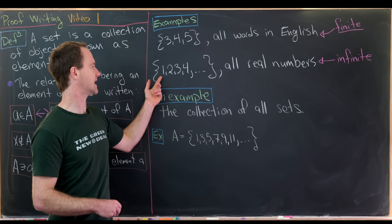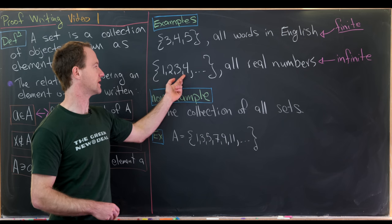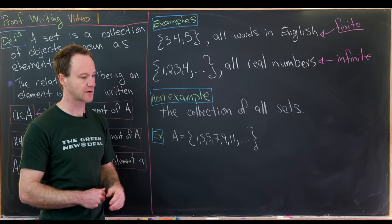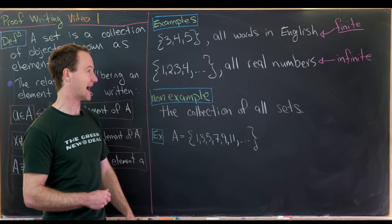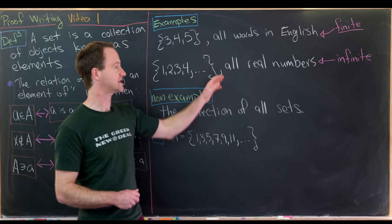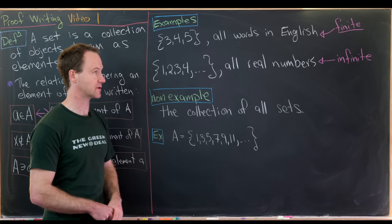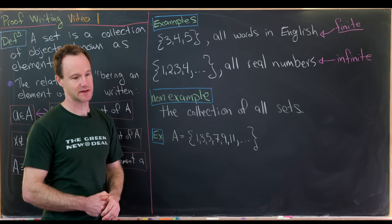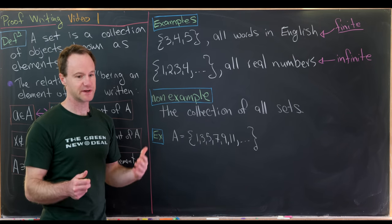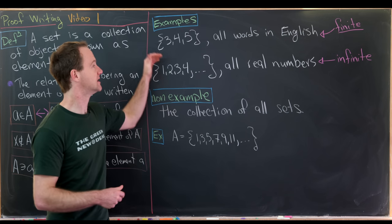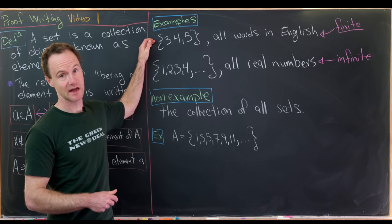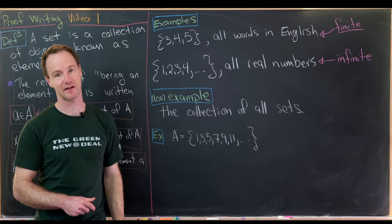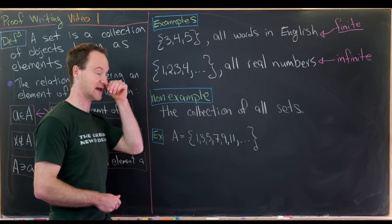We could also have the set containing 1, 2, 3, 4, 5, 6, 7, 8, and so on. We'll later call that the natural numbers, or the set containing all real numbers — both are infinite sets with infinitely many elements. So already we see two different types of sets: finite sets containing finitely many elements, and infinite sets containing infinitely many elements.